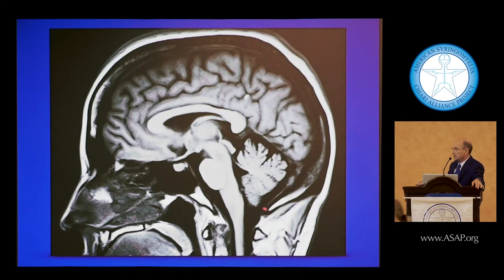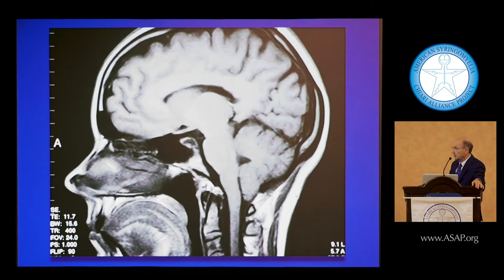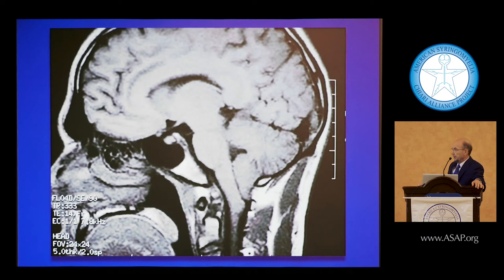Here is a happy situation — no crowding, no one would call this anywhere near Chiari malformation. This shows a descent of the cerebellar tonsils close to C2. Drawing a line at the foramen magnum, there's really not much space for CSF to flow. But Chiari is very variable. Here's a worse case — a long stretched-out medulla.